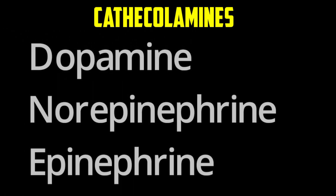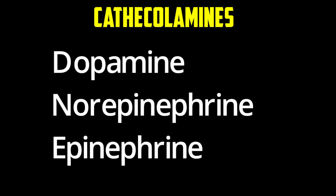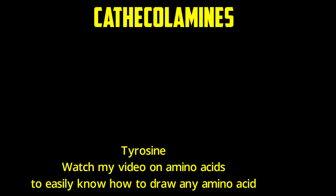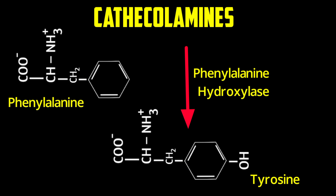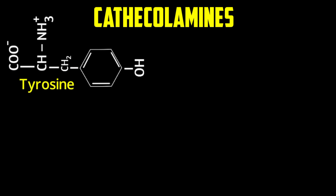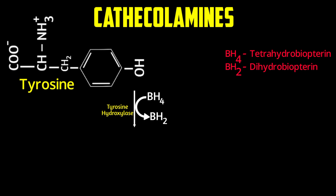The next neurotransmitters are the catecholamines: dopamine, norepinephrine, and epinephrine. They are synthesized in a common pathway from the amino acid tyrosine. The first and rate-limiting step is the hydroxylation of the tyrosine ring by tyrosine hydroxylase, a tetrahydrobiopterin (BH4)-requiring enzyme.